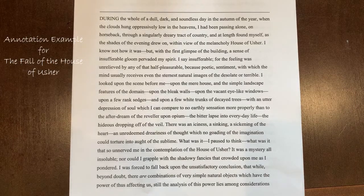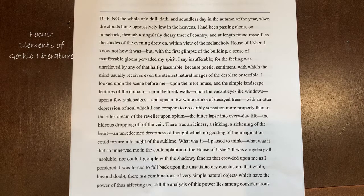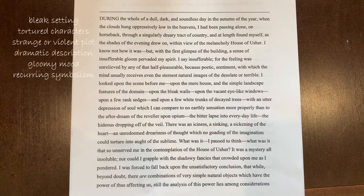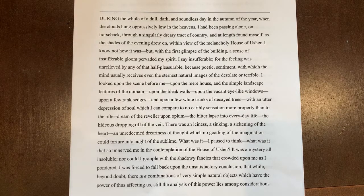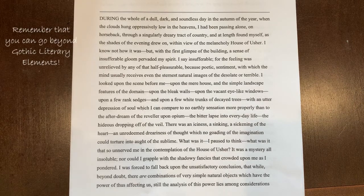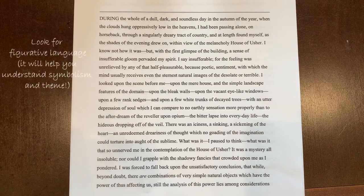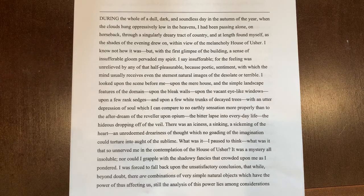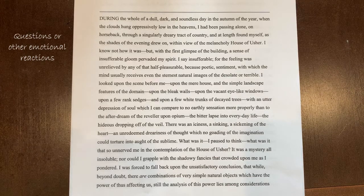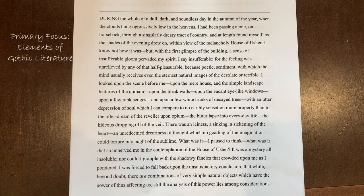Welcome to the annotation example for 'The Fall of the House of Usher.' Our areas of focus are the elements of gothic literature: bleak setting, tortured characters, strange or violent plot, dramatic description, gloomy mood, and recurring symbolism. You may also find examples of figurative language or other elements we've looked at previously this semester — questions, reactions, vocabulary — so you're not limited to gothic literary elements; that's just your primary focus.